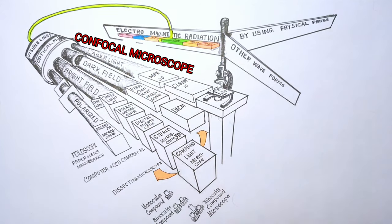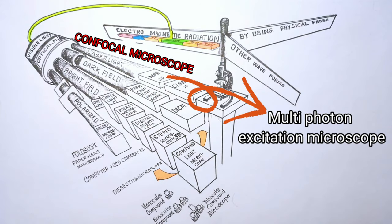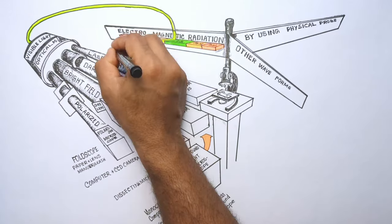Multi-photon excitation microscope or MPE is an advanced confocal microscope. The use of multiple lasers reduces damage to cells and allows high resolution observation of deep areas of the sample. This type of microscope is used to observe nerve cells and blood flow in the brain.